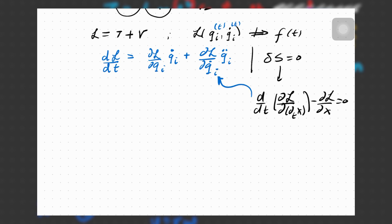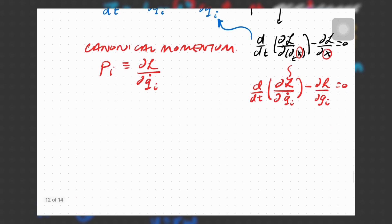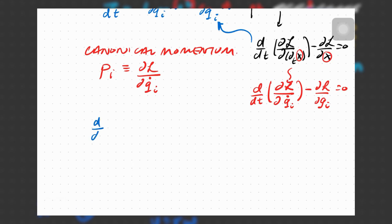Instead of using x, I'll write it in terms of the generalized coordinate, which simplifies things further. I also define the canonical momentum — it's just a fancy term for momentum in generalized coordinates — as p_i = del L over del q_i-dot. Substituting into the Euler-Lagrange equation gives: d over dt of p_i times q_i-dot minus the Lagrangian equals zero.